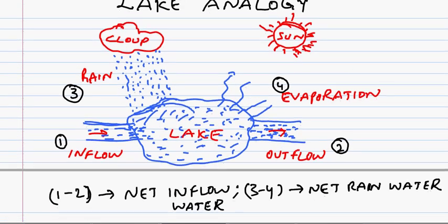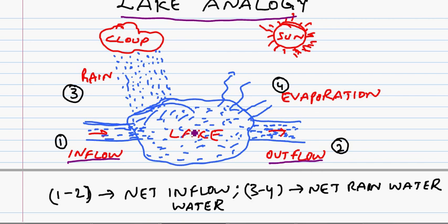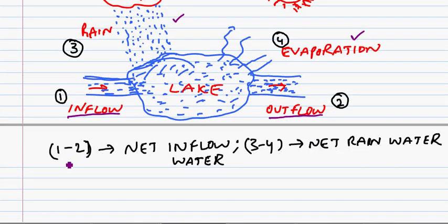To better understand this, let's use a lake analogy. Assume there is a lake with certain water, an inflow of water into the lake, and an outflow of water from the lake. The water in the lake can increase if inflow is greater than outflow, and if rain is greater than evaporation, where evaporation is driven by the sun's temperature. Terms one minus two give the net inflow of water, and three minus four give the net rainwater.